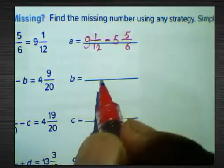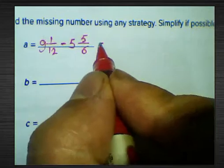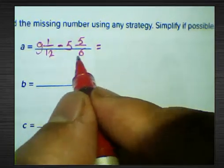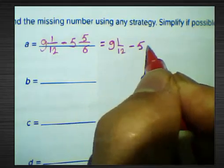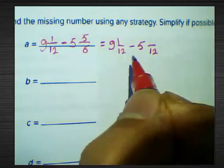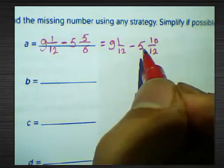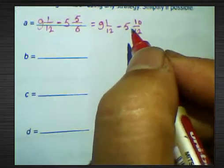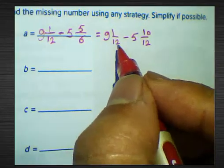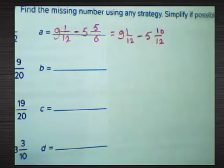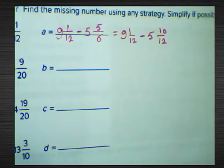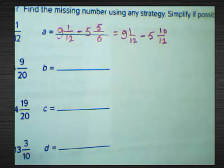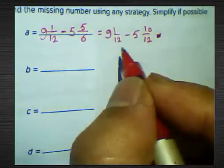Find the least common multiple between the denominators. 12 is the LCM — 12 can be divided by 6. So write 9 and 1 over 12 subtract by 5 and 10 over 12. Since 1 minus 10 we can't do, we borrow 1 from 9, making it 8, and 1 over 12 becomes 13 over 12. Write 8 here.